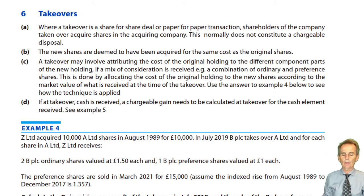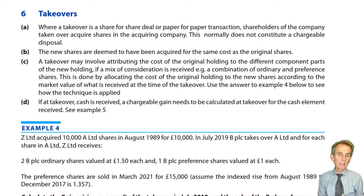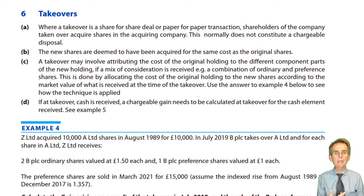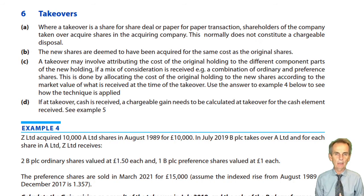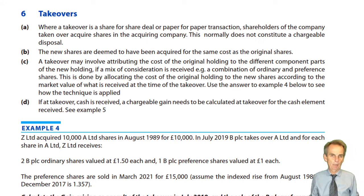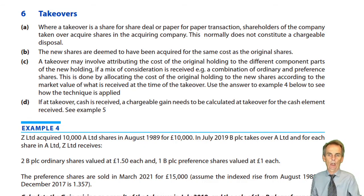In our study of corporate disposals of shares and securities, we have seen slightly different identification rules compared to those applicable to individuals, and how those rules are applied for acquisitions and subsequent disposals. Each acquisition is an operative event requiring us to re-index that share pool. The one exception where cost is not involved in a purchase of shares is through a bonus issue — so the three ways to acquire shares are: original purchase creating the share pool, a rights issue, and a bonus issue.